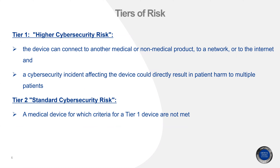Cybersecurity risk also has tiers of risk, taken from the FDA's draft guidance. Tier one is high cybersecurity risk — the device can connect to another medical or non-medical product, network, or internet, and if there is a cybersecurity incident, it could directly result in patient harm or affect multiple patients. Examples include pacemakers, dialysis devices, and insulin or infusion pumps. Tier two is standard cybersecurity risk — any device not defined by the tier one definition falls under tier two.